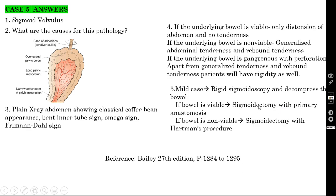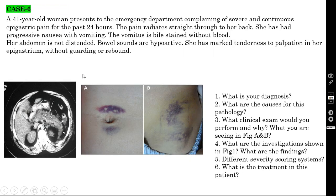If the bowel is already non-viable and you are doing emergency exploratory surgery, you can perform sigmoidectomy but should not do primary anastomosis. Instead, you must do Hartmann's procedure — proximal colostomy, with the distal colon closed and kept inside the peritoneal cavity.